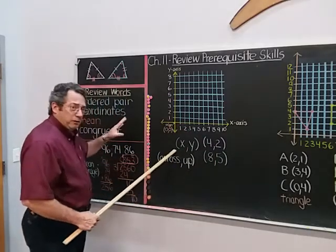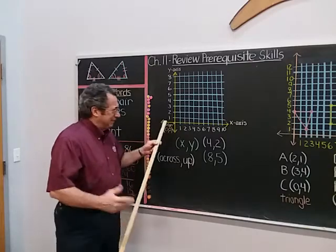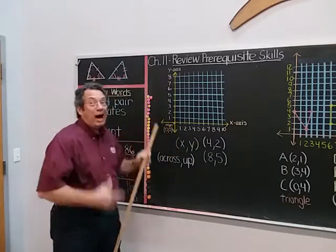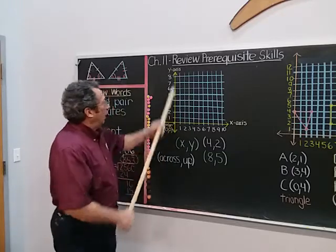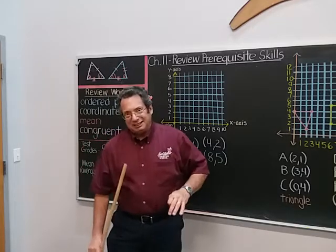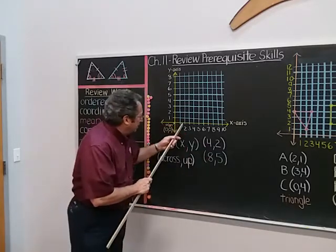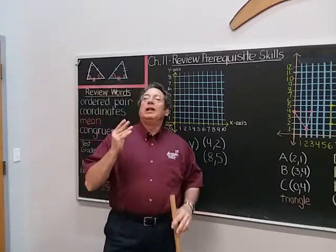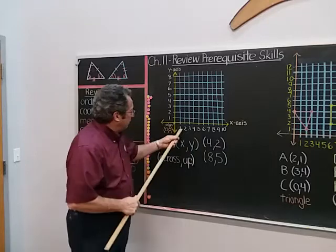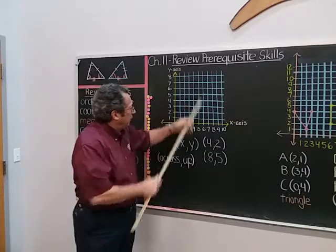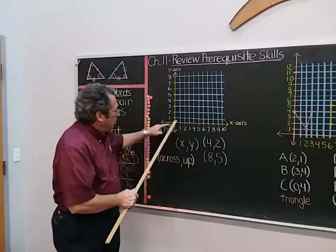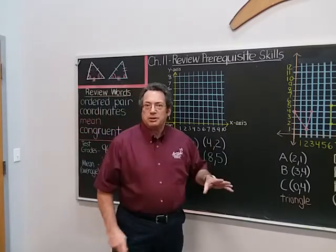When you have a coordinate grid, we have two axes. We have the one going across horizontally, called the x-axis, and the one that goes up vertically, called the y-axis. The lines get numbered. Some of you number the spaces on a coordinate grid and put a one between two spaces — no, don't do that. We number the lines. The vertical lines and horizontal lines each get a number. Zero, zero is called the origin, so the origin is always zero, zero on a coordinate grid.